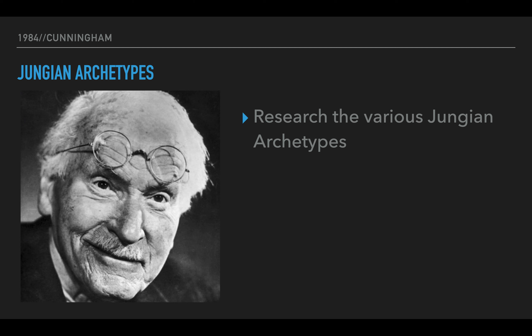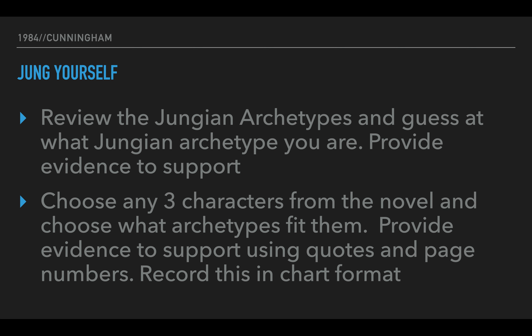Carl Jung — we talked about him before — he popularized the idea of archetypes. Archetypes are patterns that exist in literature and storytelling across cultures, to the point where it seems that humans are hardwired to create these types of characters and stories that repeat themselves across humanity. Jung narrowed it down to, I think, 12 character types that exist in literature. A quick Google will reveal those with their various traits, and something you could do would be to research those various archetypes.